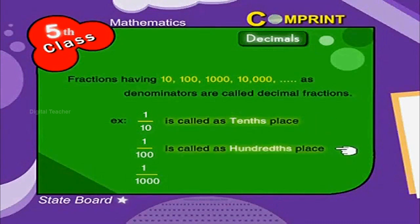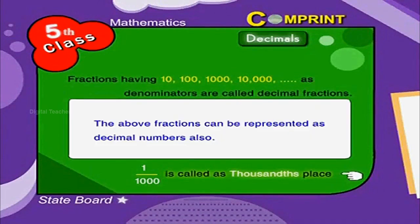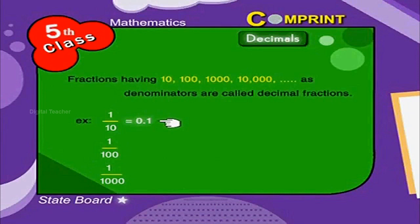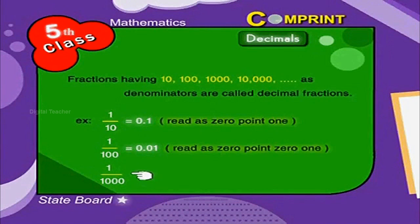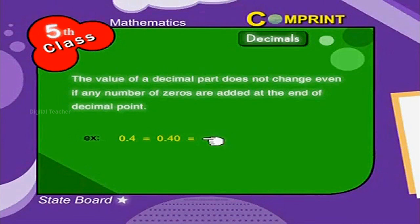1 by 100 is called the hundredths place. 1 by 1000 is called the thousandths place. These fractions can also be represented as decimal numbers by placing a point between them: 1 by 10 equals 0.1, 1 by 100 equals 0.01, 1 by 1000 equals 0.001. The value of a decimal does not change if zeros are added at the end — for example, 0.4 equals 0.40 equals 0.400 and so on.